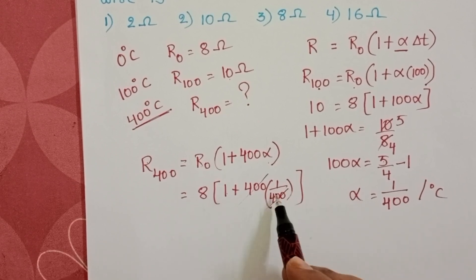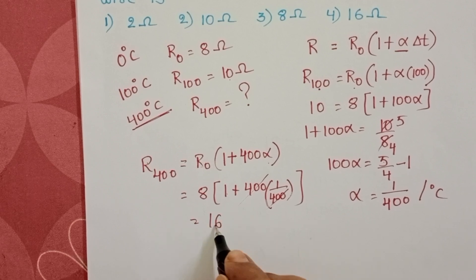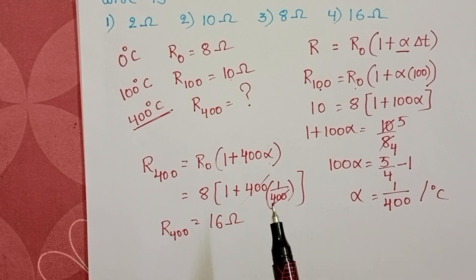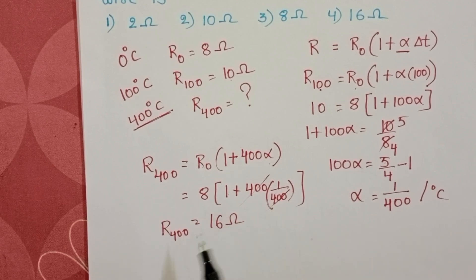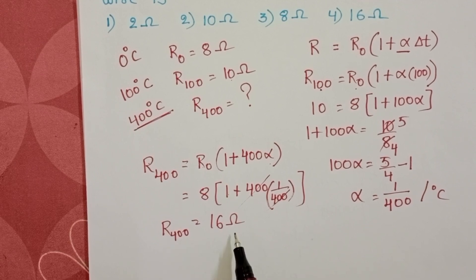This gives 1 + 1 = 2, so R₄₀₀ = 2 × 8 = 16 ohm. The resistance of the platinum thermometer at 400 degree Celsius is equal to 16 ohms.